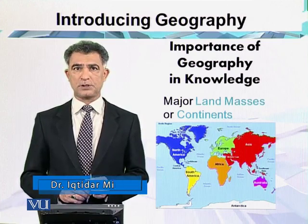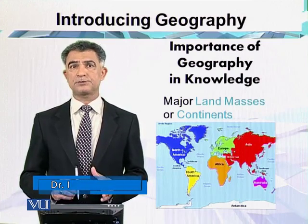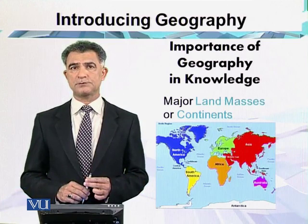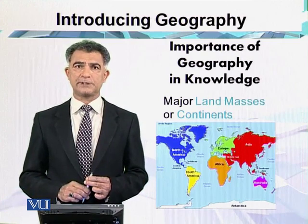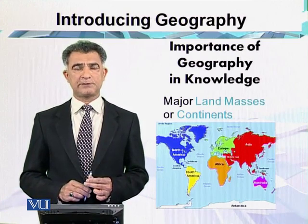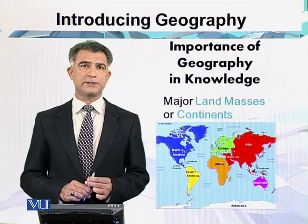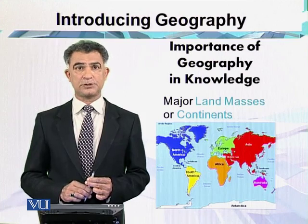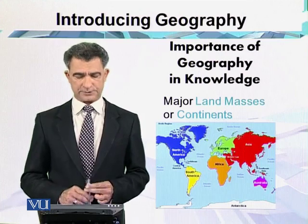So these are the six major continents which have settlements of humans. The seventh continent is Antarctica, which is actually covered with ice.